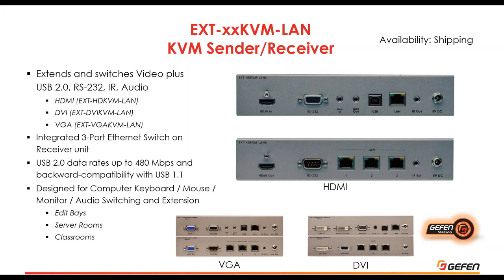In addition to video, the KVM units extend USB 2.0, RS-232, infrared signals, and analog audio. The receiver unit also has a built-in switch, so you can connect other devices to the network through the KVM receiver. USB supports up to 480 megabits with backwards compatibility. These are designed primarily for computer keyboard/mouse and audio switching — for edit server rooms, classrooms, and any place where all those signals need to be switched.